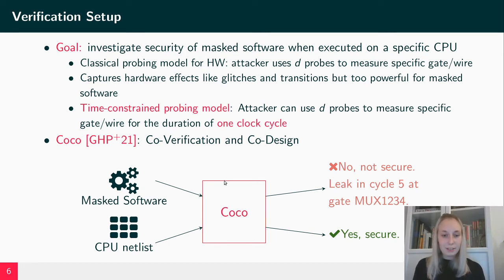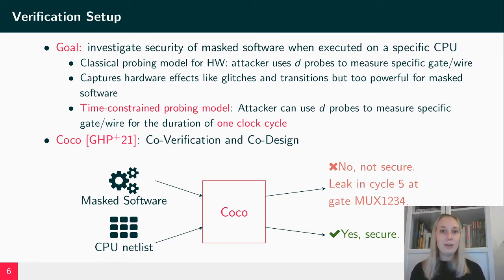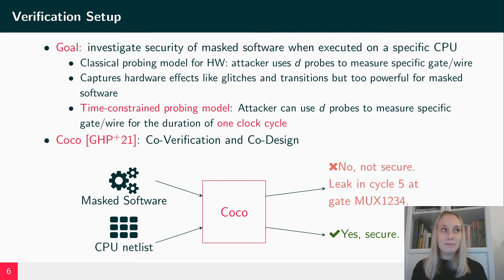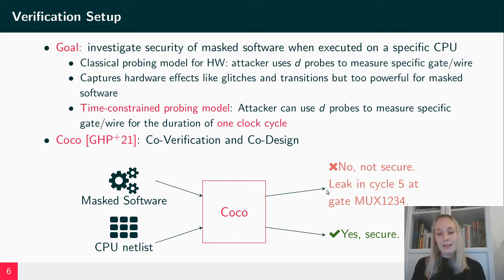The COCO verification tool verifies that a certain piece of masked software, when executed with a specific CPU netlist, is secure in the time-constrained probing model. COCO takes as input the masked software, the CPU netlist, and background information such as the location of the shares when execution starts — which register holds which share, which memory location holds which share. The verifier checks for each gate in the CPU netlist and each cycle in the execution whether an attacker can measure information about any native unshared value. If verification is successful, it outputs 'secure'; otherwise it identifies the cycle and gate causing the leak.